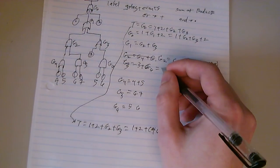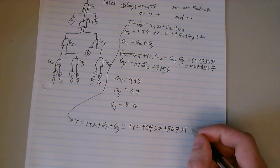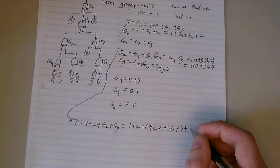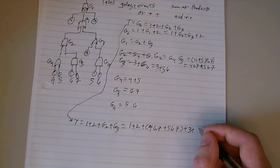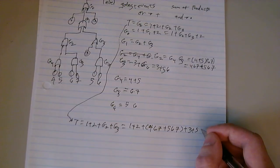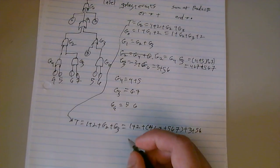We said G3 equals 3 plus G6. 3 plus G6, well that's just 3 plus 5, 6. So plus G3 equals 3 plus 5, 6.